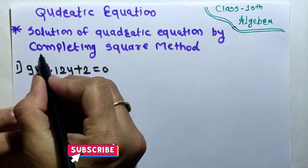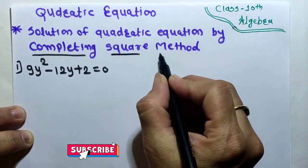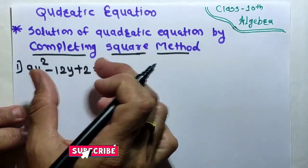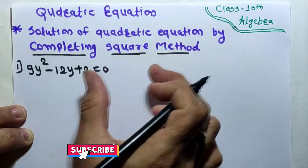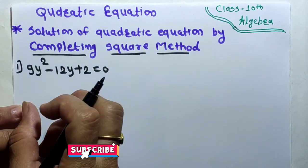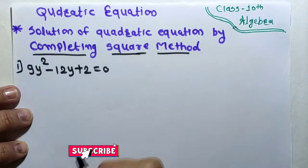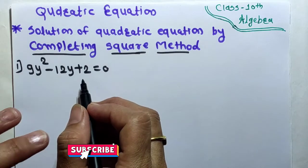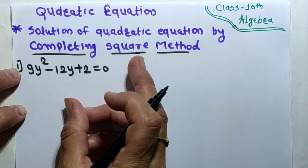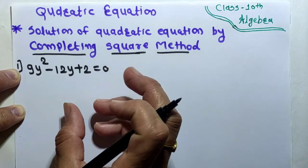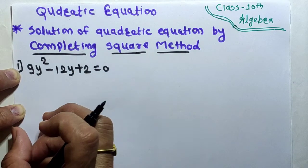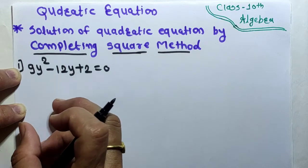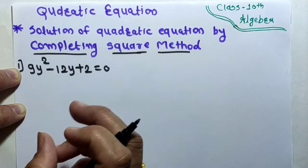Now we will discuss the completing square method. By this method we can solve quadratic equations. This method is used very rarely, but in the exam if there is a question to solve by completing square method, we need to know it. In this method only three steps are given, and we will remember those three steps to solve the question.